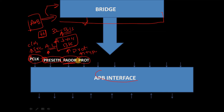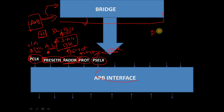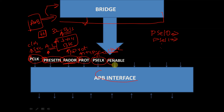The signal is not PROT — it is PPROT. Next, we have PSELX, which is used to select the corresponding slave. PSEL0 selects slave 0, PSEL1 selects slave 1, and so on. Then PENABLE, which enables the transfer.